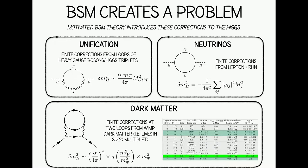Similarly, for neutrinos: if you have a seesaw mechanism where there's a right-handed neutrino coupling to the lepton doublets and the Higgs, with a large Majorana mass that gets integrated out to generate Majorana neutrino masses, then in the UV theory there's a diagram involving the Yukawa coupling between the right-handed neutrino and the left-handed lepton doublets. Those talk to the Higgs. If these right-handed neutrinos are up at the seesaw scale — say 10 to the 13 GeV — that mass scale dominates this loop, giving an enormous finite contribution to the Higgs mass coming from whatever physics fixed up your neutrino masses. This contribution is proportional to the Yukawa couplings, so if those couplings are order one and you have a genuine seesaw, it's again some enormous finite contribution.